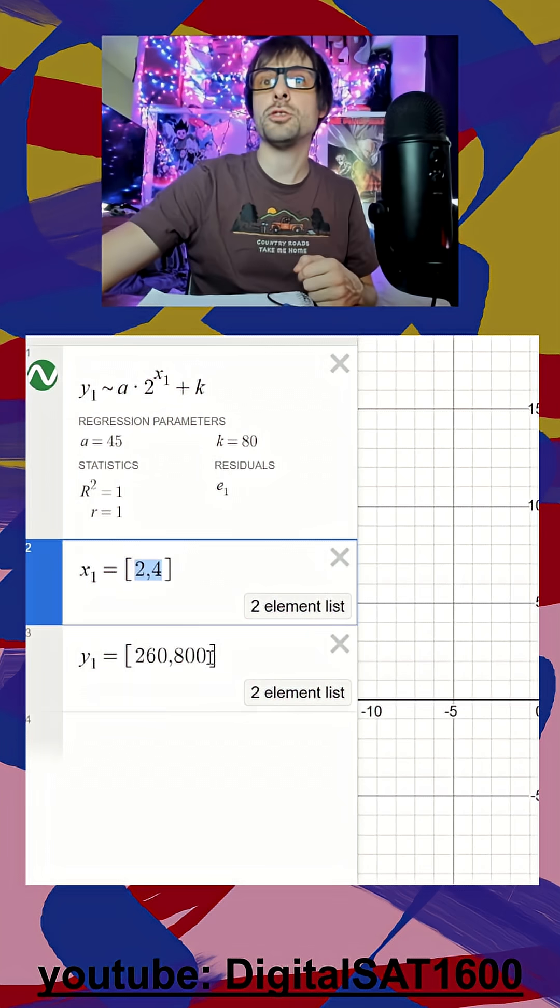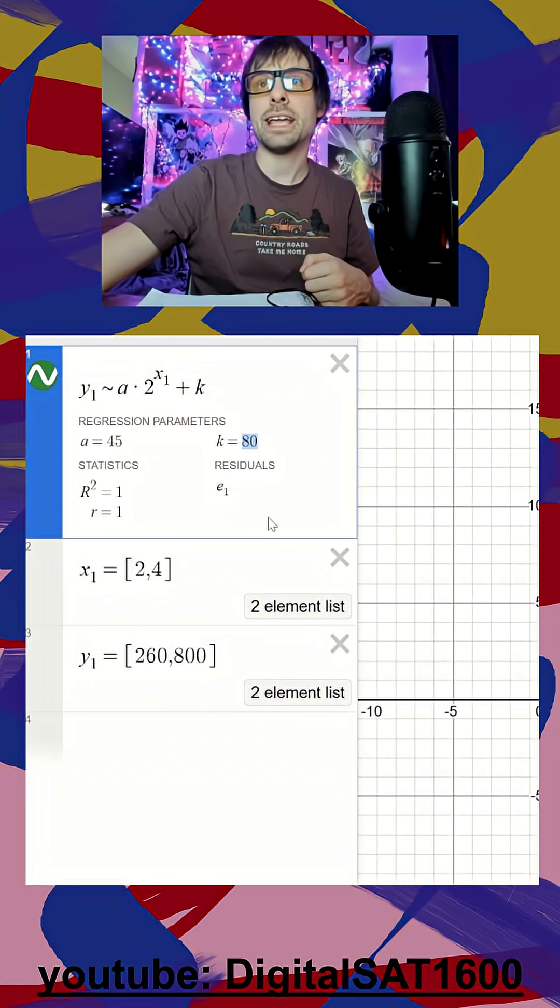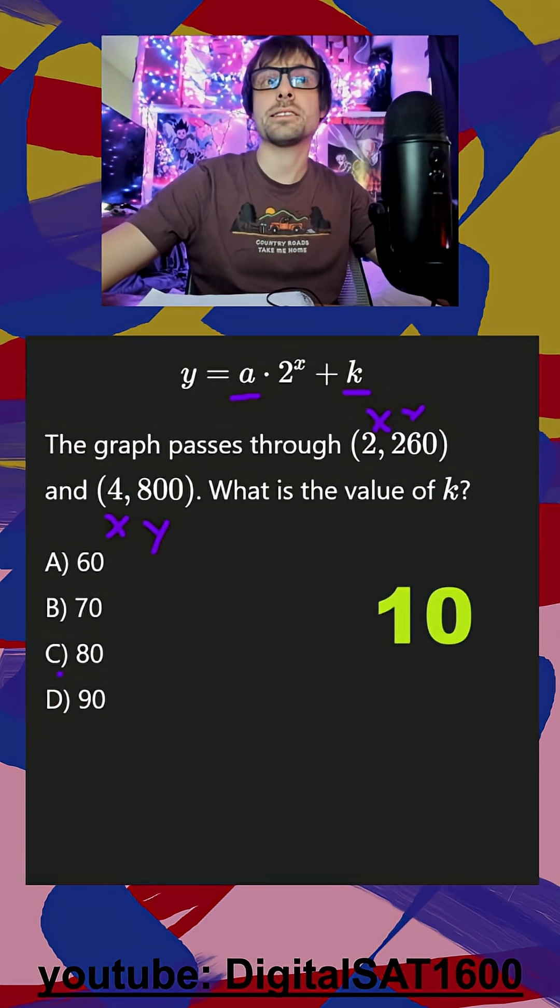my two values for y. It instantly gives me my a and my k value and I am done. We'll jump back here and our answer looks like it's going to be c.